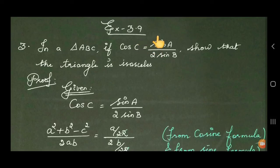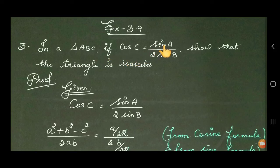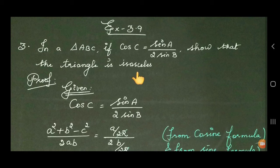Exercise 3.9, third sum. In a triangle ABC, if cos C is equal to sin A divided by 2 sin B, show that the triangle is isosceles.